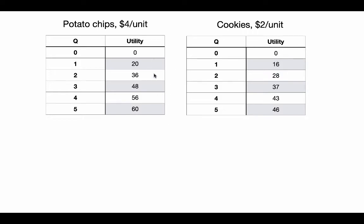This is just an arbitrary scale that you create for yourself, so you'd have to be given some utility information. Suppose you were given this information — you'd also be given the prices. This is just telling me that the more I increase my consumption of potato chips, the more utility I get, and this shows how much extra utility. From this, I can talk about marginal utility — how much extra utility do I get from one more unit?